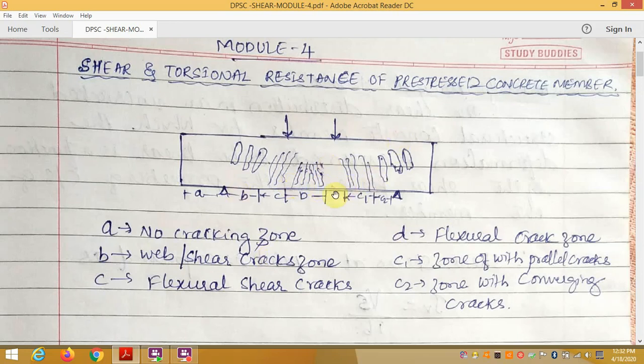The bottom portion of the beam is subjected to a tension force, and the top of the beam above the neutral axis is subjected to compression forces. At the end, there will be web shear cracks developed due to the stresses and the load on the beam.